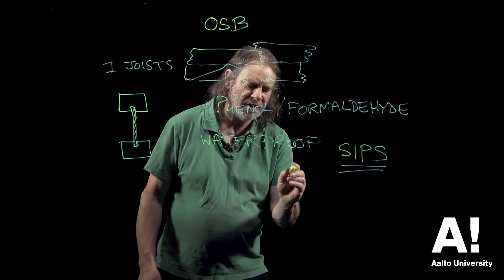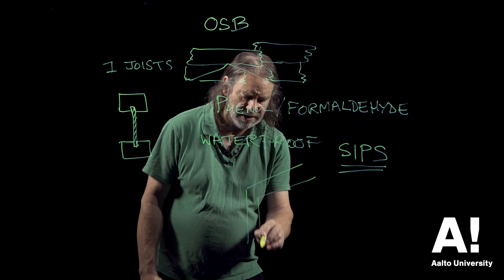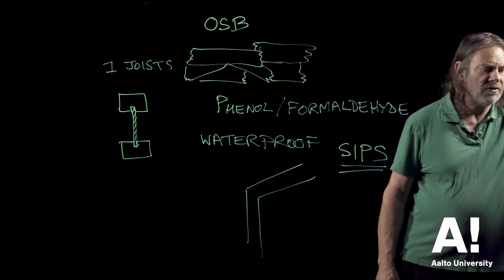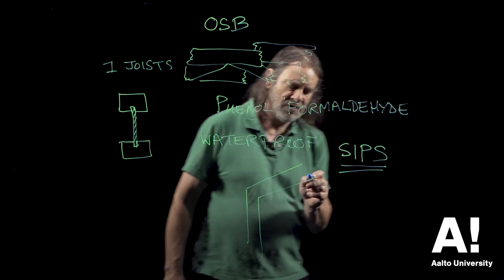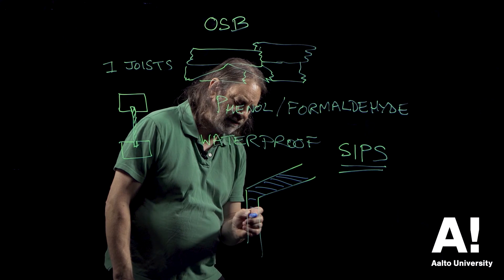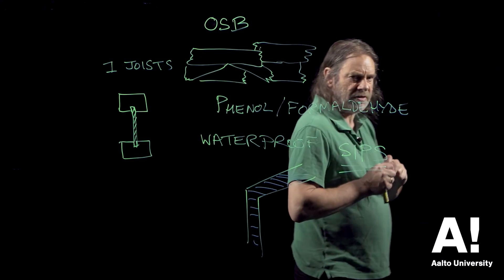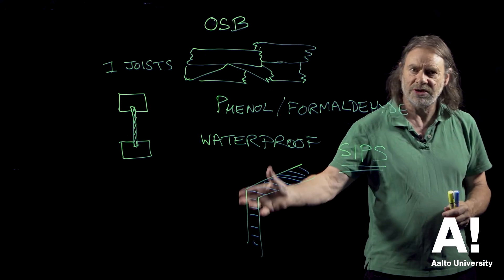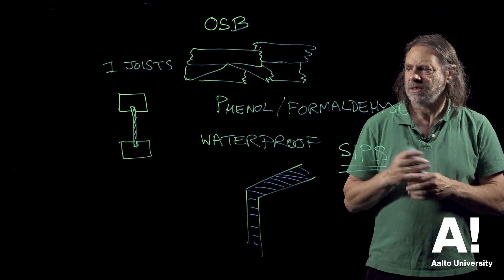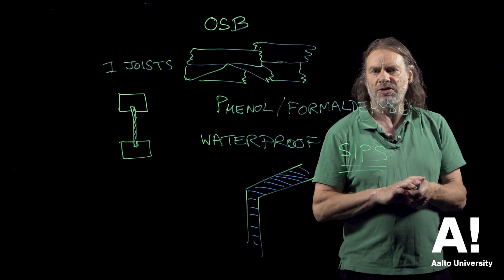In which case you have two of these OSB panels like that, and in between there you have a layer of insulation foam which is usually polyurethane foam. So these are very light and they're very stiff and strong structures, so they have found a lot of use in construction. OSB panels are very much used in construction applications.